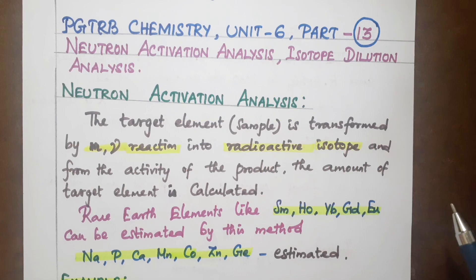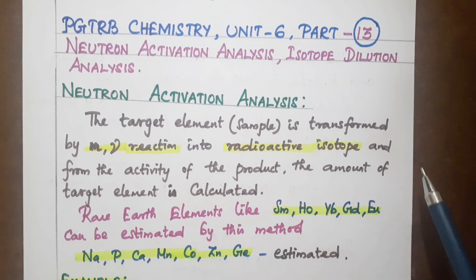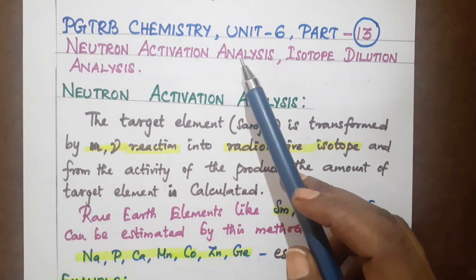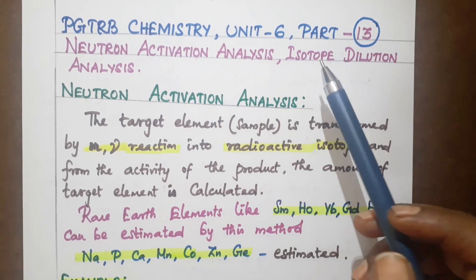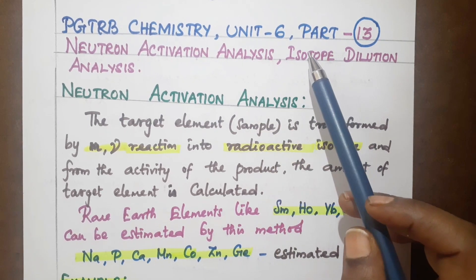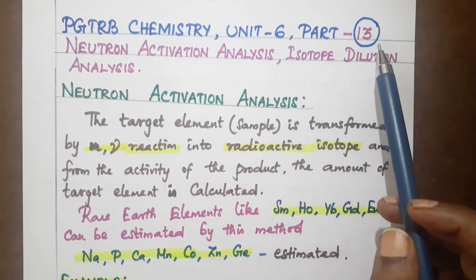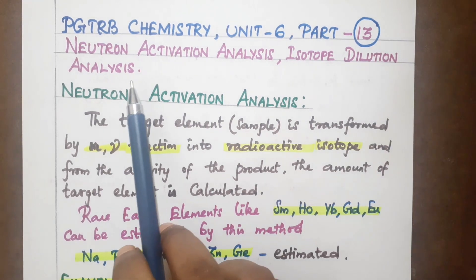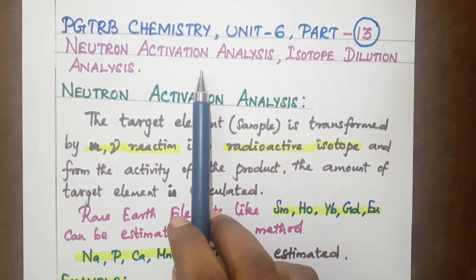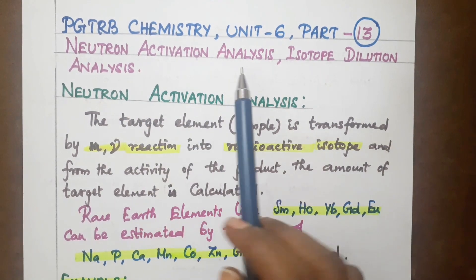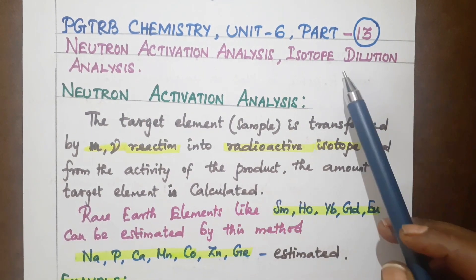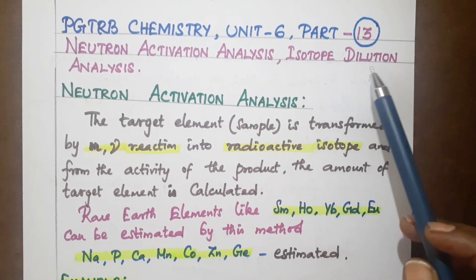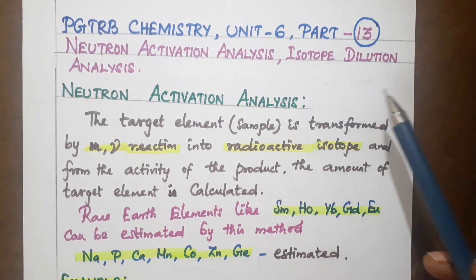Hello, good morning. Welcome to Chemistry School of Learning YouTube channel. In the PGDRV portion, Unit 6 — that is Nuclear Chemistry — 13th class, we are covering two topics: Neutron Activation Analysis and Isotope Dilution Analysis.